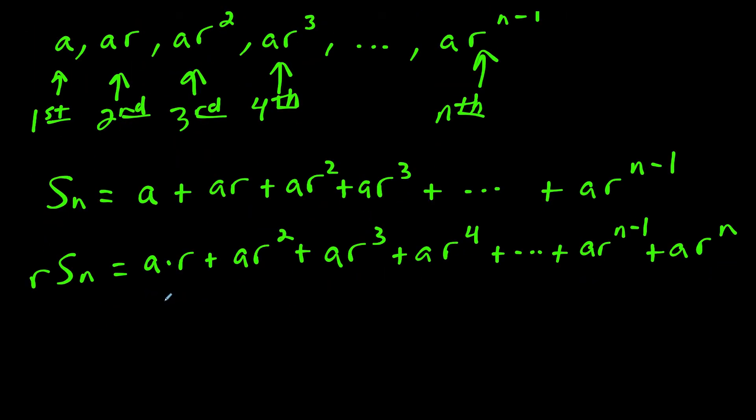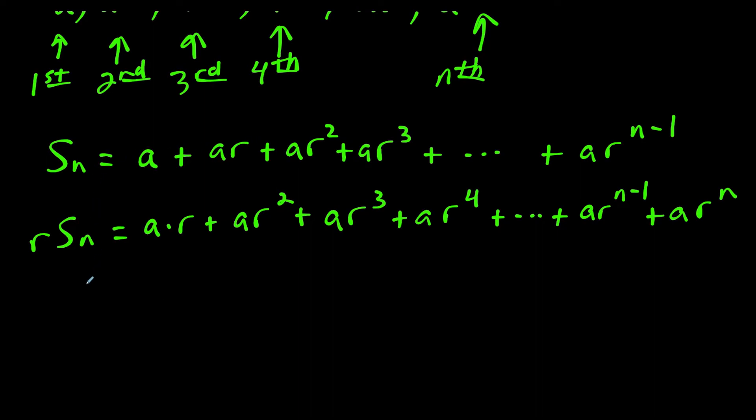So then what we want to do is take these two equations and subtract them. So we're going to do s sub n minus r times s sub n. And I'll put this bottom part in parentheses. And notice what happens when we subtract. Well, we have a times r minus a times r. So when we subtract equal things, they're going to cancel out.